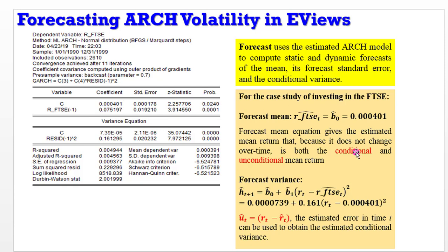So how do we generate the forecast variance? The forecast variance gives us the estimated heteroskedastic variance at t plus 1 — that is the forecast value. The beta naught in this case is obtained from the variance equation in the table: 0.0000739. And beta 1 is the coefficient given in the variance equation table — that is the coefficient for the squared value of the residual at lag 1. The equation in brackets is the estimated error: the observed value minus the estimated value of the return. The estimated error at time t can be used to obtain the estimated conditional variance.